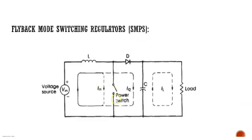When the switch is on, current flows in the inner loop and the inductor charges. At the same time, the capacitor discharges the charge it previously stored, and current flows in the output loop consisting of the capacitor and the load. When the switch is on, the diode is not conducting.